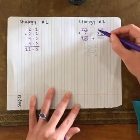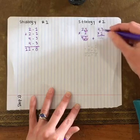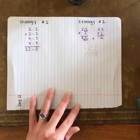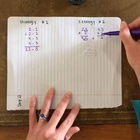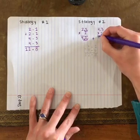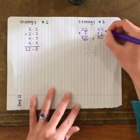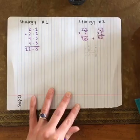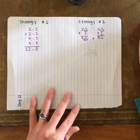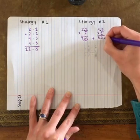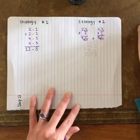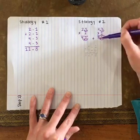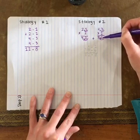Then I'll multiply 4 and 3 tenths times 2. 2 times 3 is 6. Ignoring the decimal point for now. 2 times 4 is 8. Now let's write in that decimal point. There's one decimal place in my factors. So I'll move over 1 and put one decimal place in my product. My second addend now is 8 and 6 tenths.